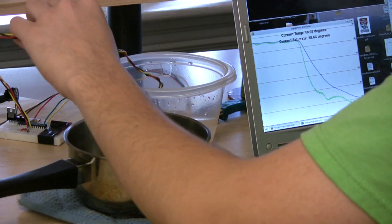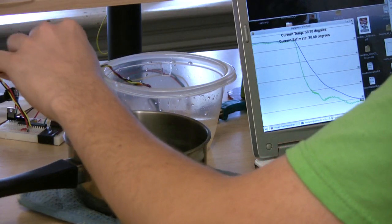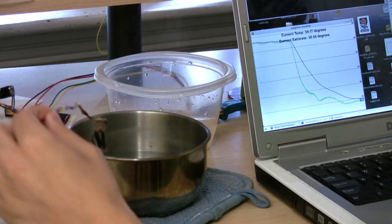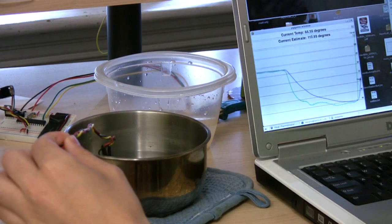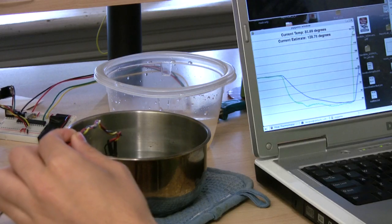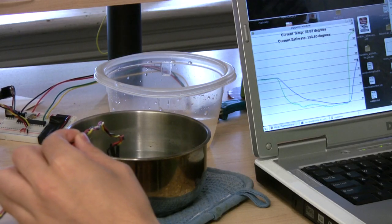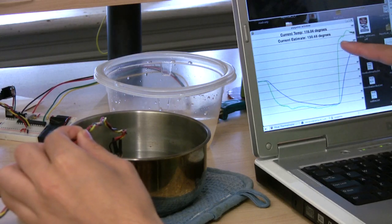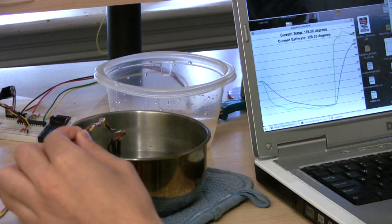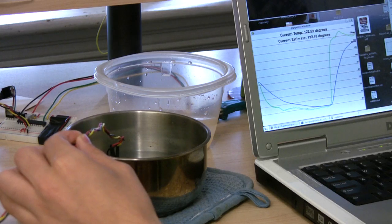So now we are going to do the same thing we did before, going from room temperature to hot water. But now we are showing two lines. The blue line is the raw temperature measurement coming from the sensor. And the green line is the output of our predictive filter. Notice how the green line rises much faster than the measured output and is continuously guessing what the temperature at the tip actually is. Pretty cool, huh?